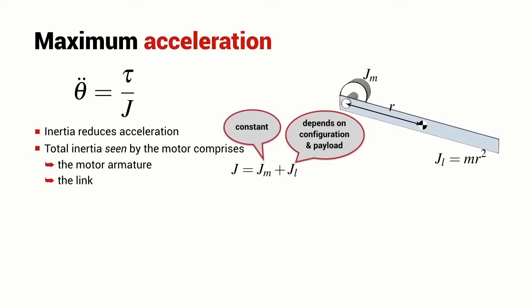We can write the total inertia that the motor experiences in terms of these two components, the motor armature inertia which is a constant and the inertia of the link.